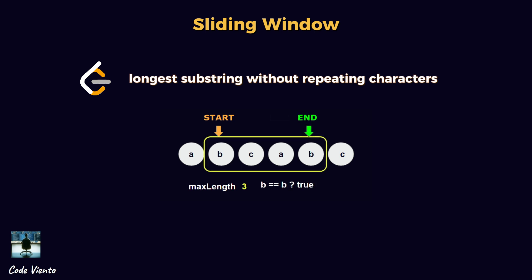Start with left equals zero and right equals zero. Character set is null. Expand window to A, A-B, A-B-C. When duplicate A appears, move left. Continue expanding and shrinking dynamically. Max length found is three.